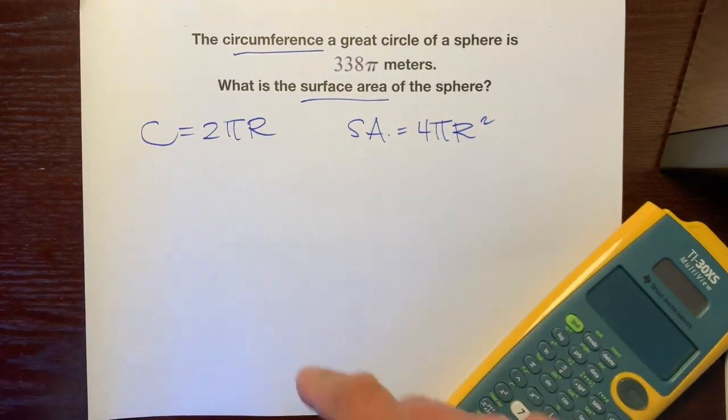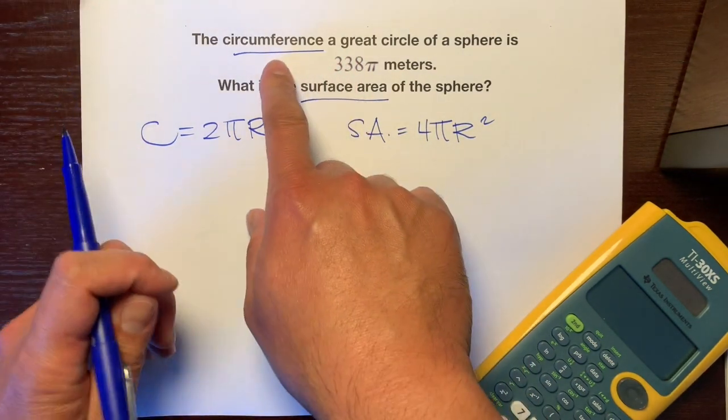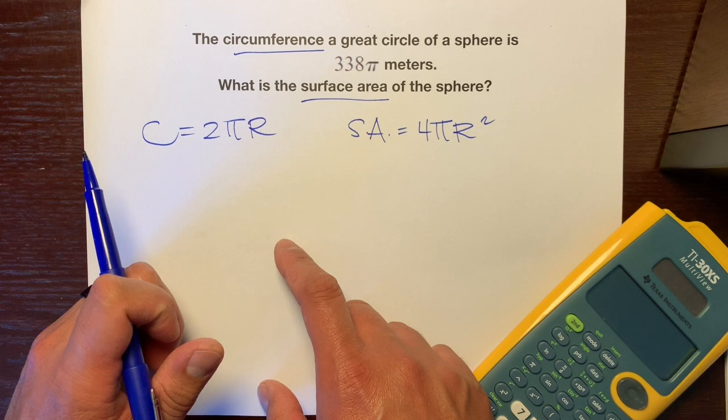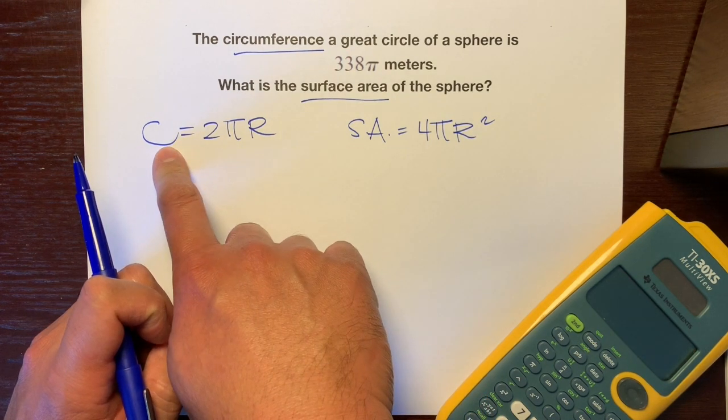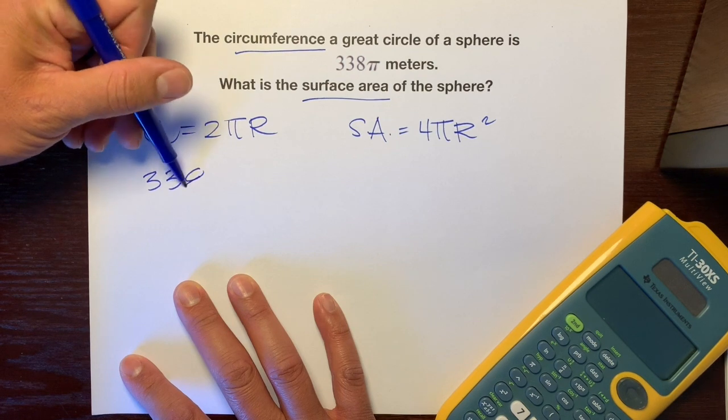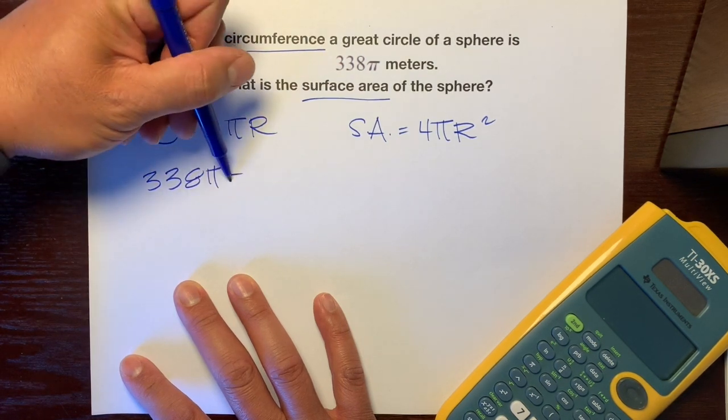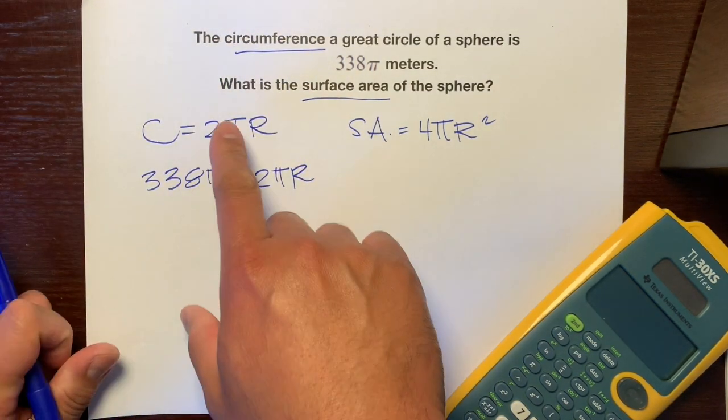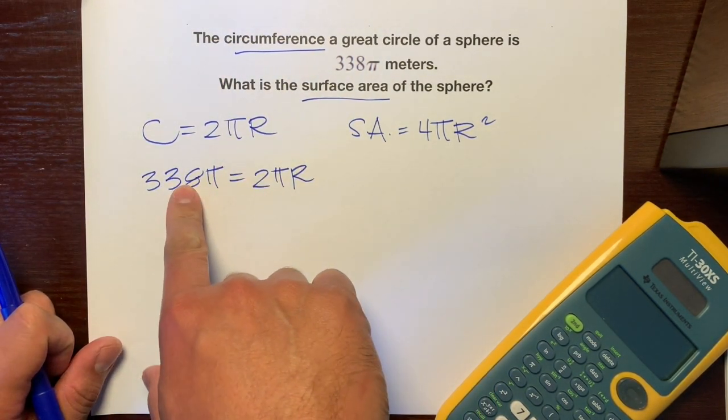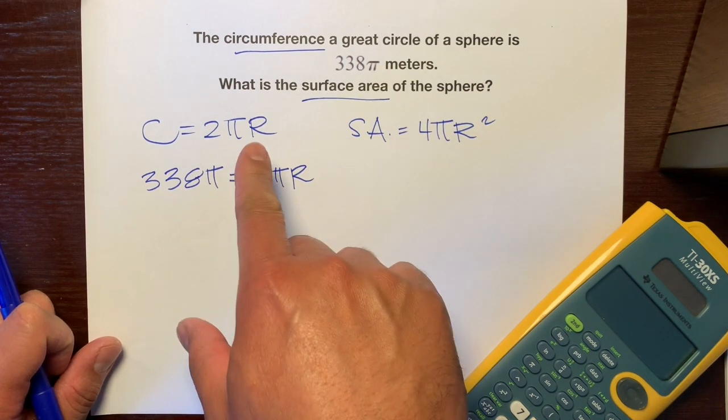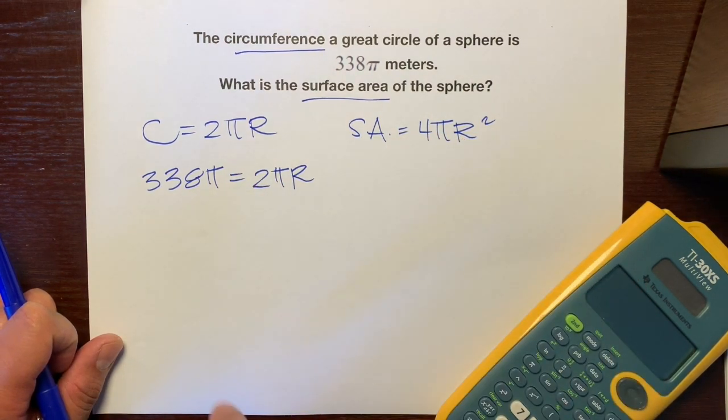All right, so we have the circumference of the great circle, which is 338π meters. So all we're going to do is plug that in. So 338π = 2πr. And we want to get the radius from this value so we can use it to find the surface area.